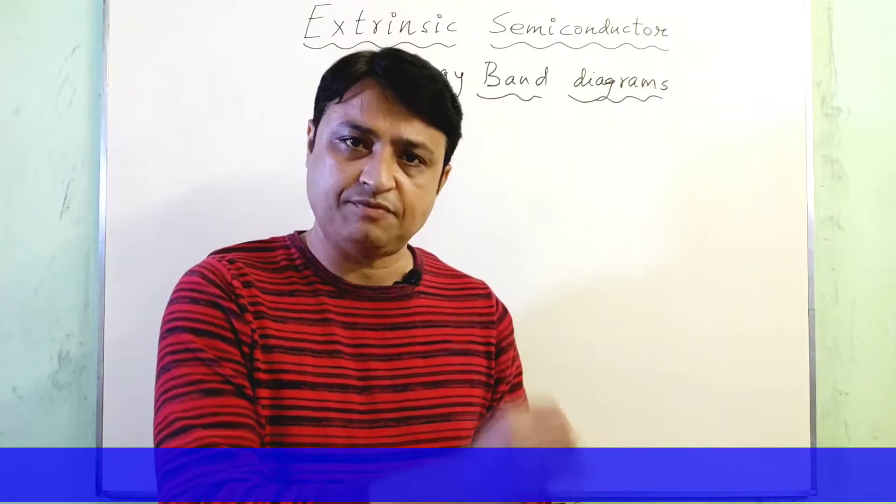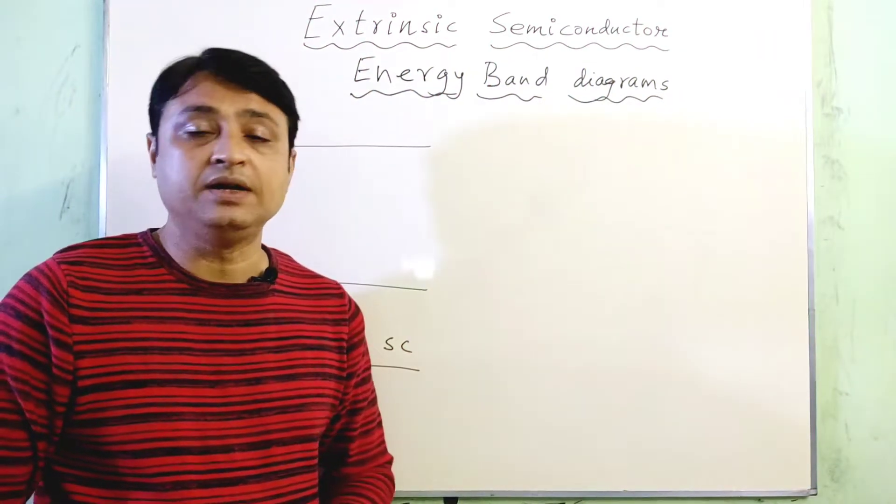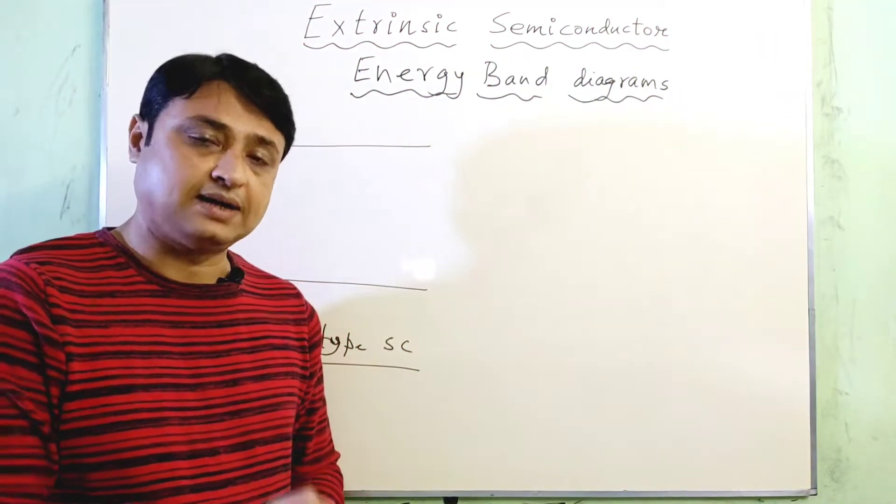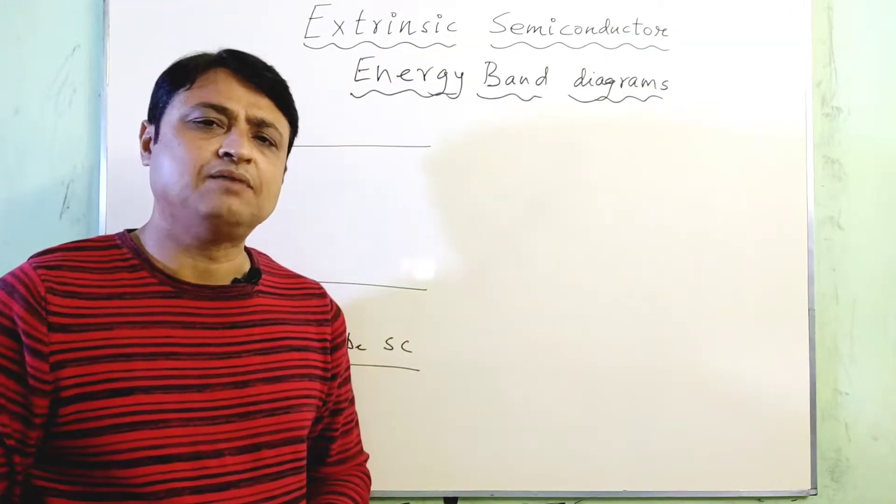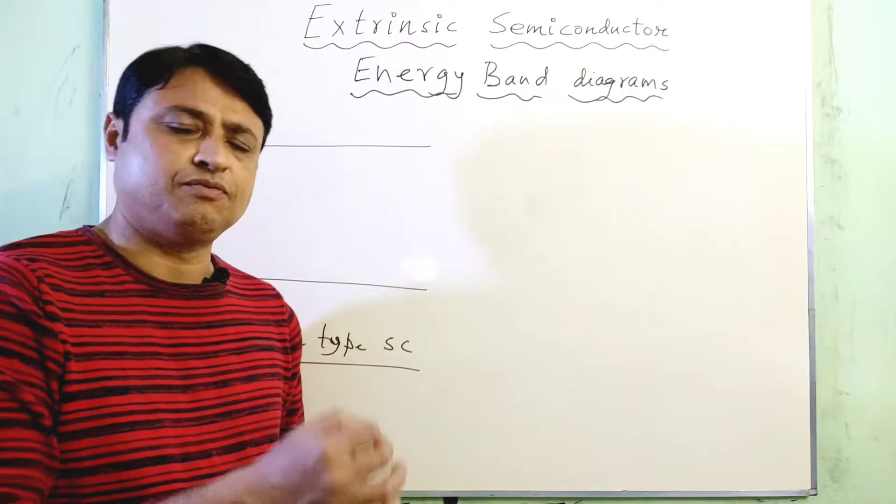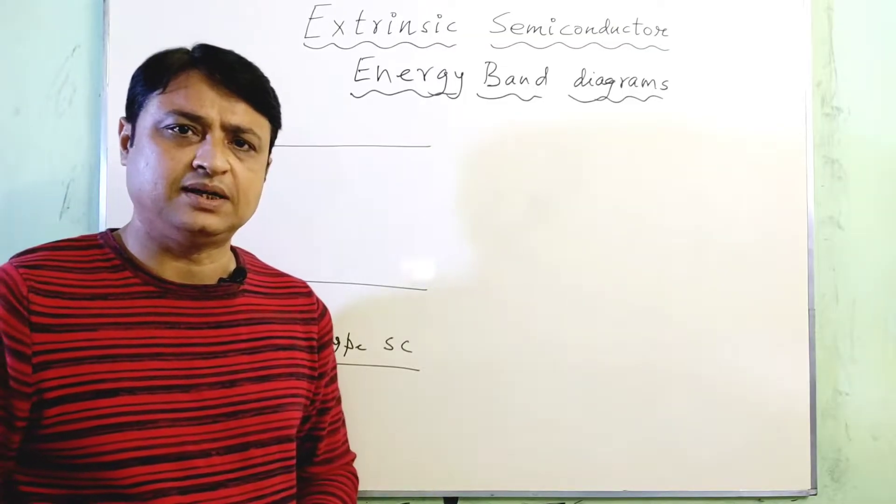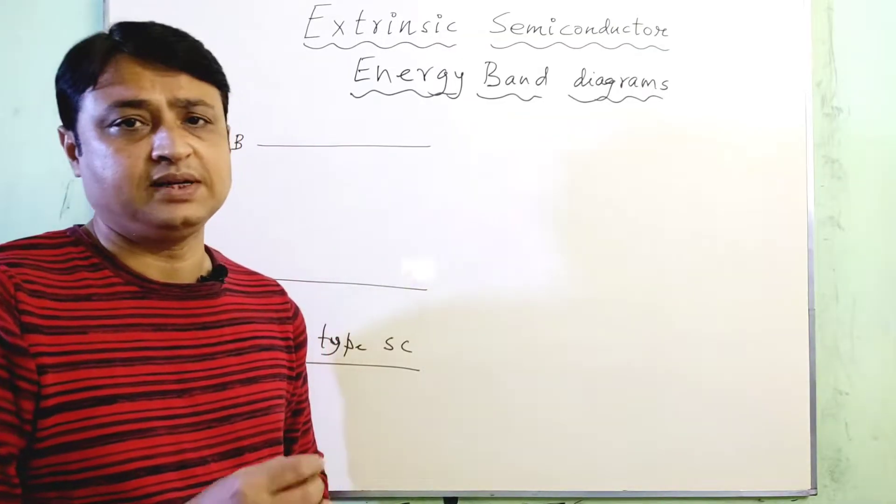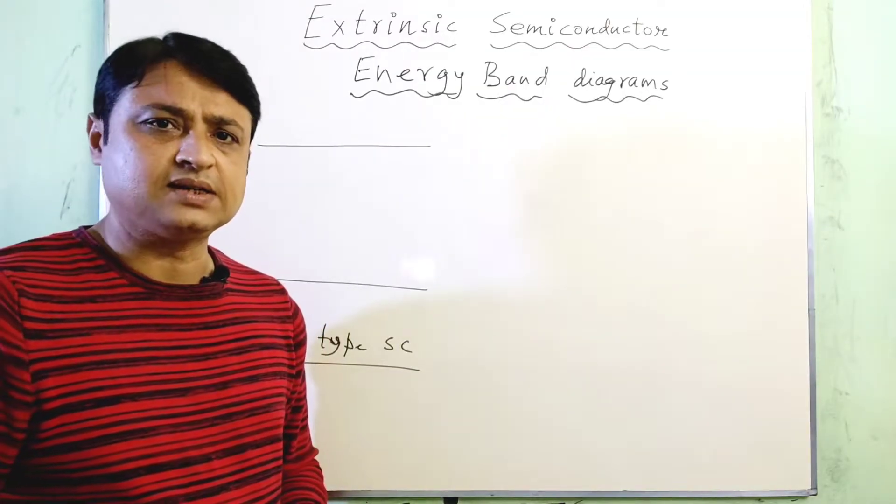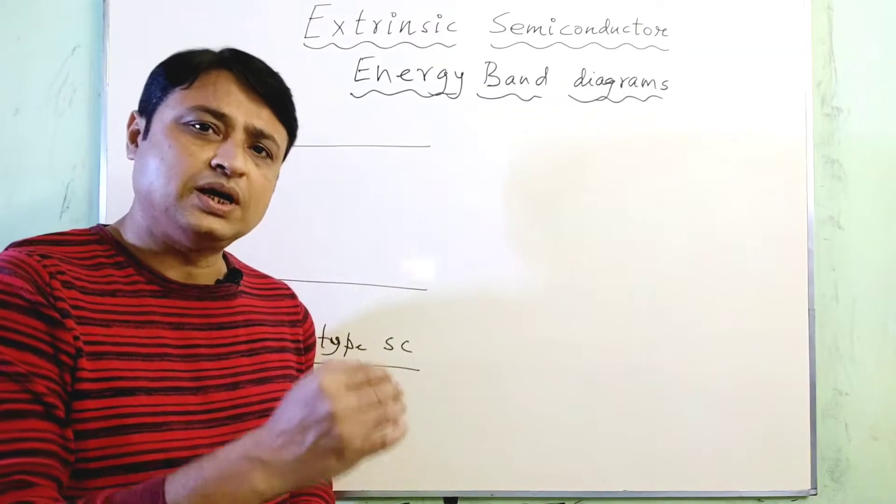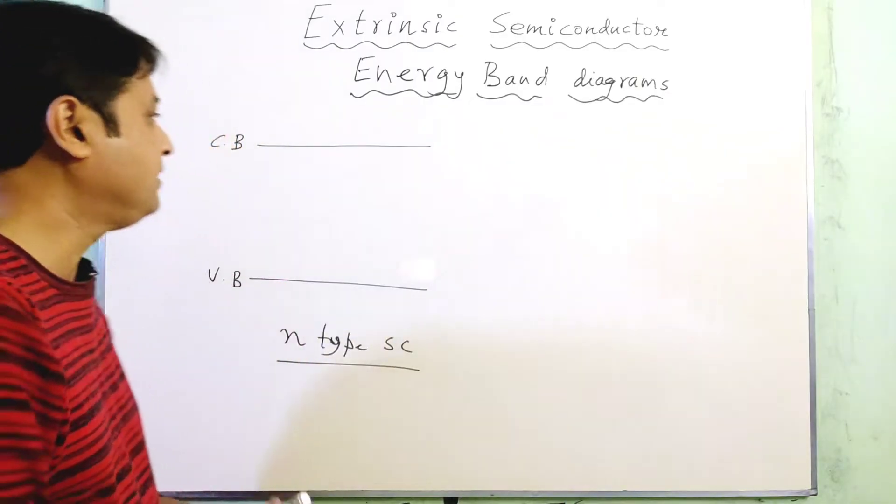As we have introduced a group 5 atom inside the silicon structure, for example, we have already talked about how a phosphorus atom can be introduced into the semiconductor structure, which actually creates an additional electron inside the silicon structure. This is the donor type of dopant.